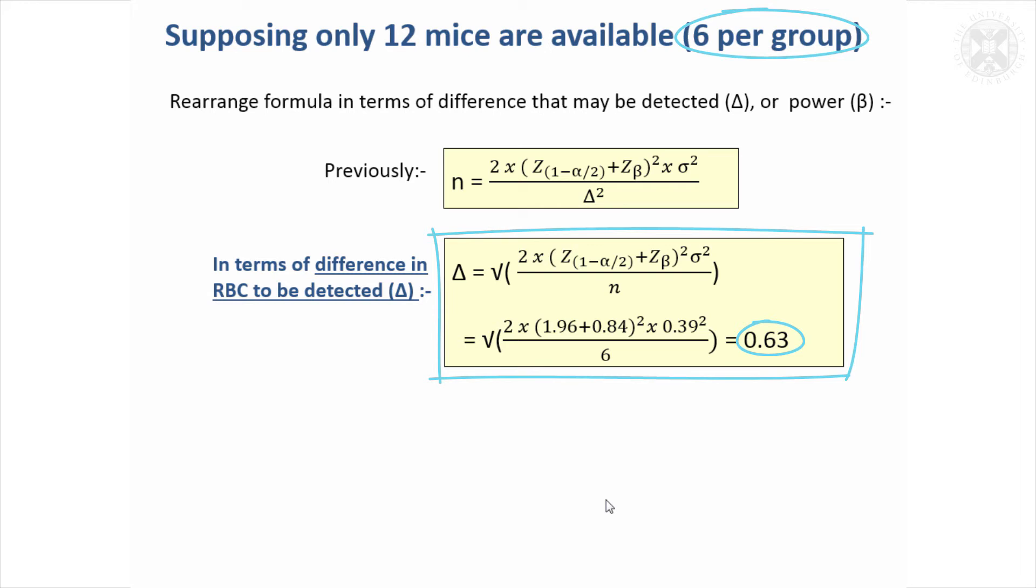it would be 0.63. So we couldn't detect a difference of 0.5, but with 80% power we could detect a difference of 0.63 if that was the underlying difference. We might want to think about, is that study still worthwhile? We can detect a bigger difference, but we can't detect a difference of the size we originally hoped to.